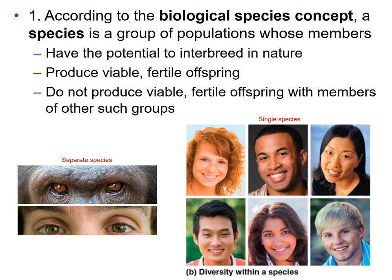The first one is called the biological species concept. According to this biological species concept, a species is a group of populations whose members have the potential to interbreed in nature, produce viable fertile offspring, and do not produce viable fertile offspring with members of other such groups.